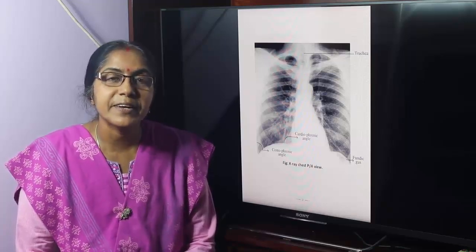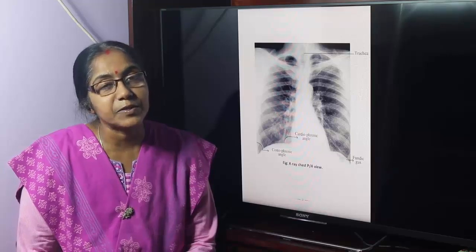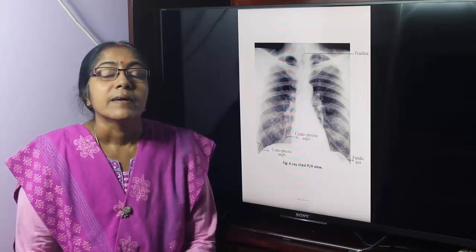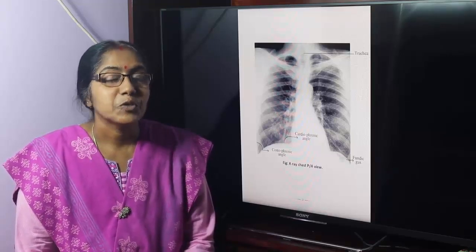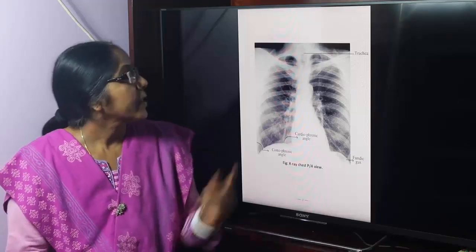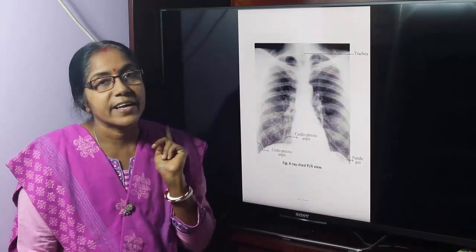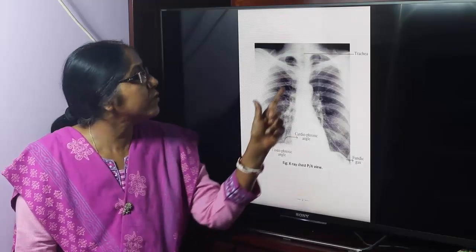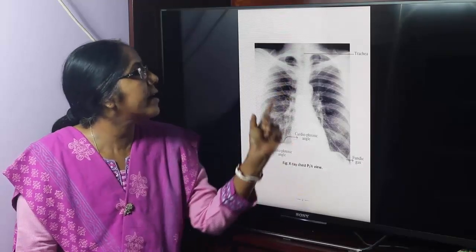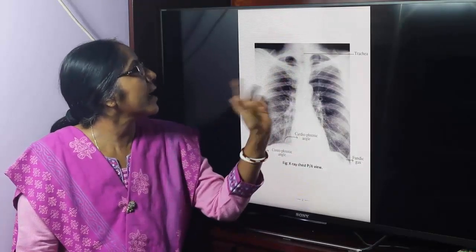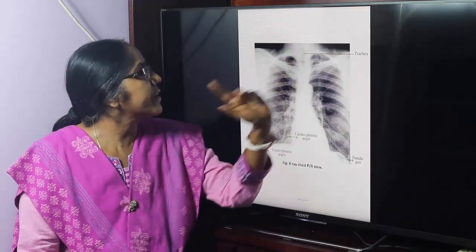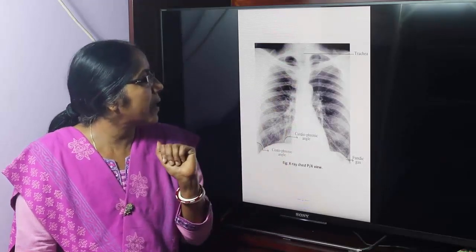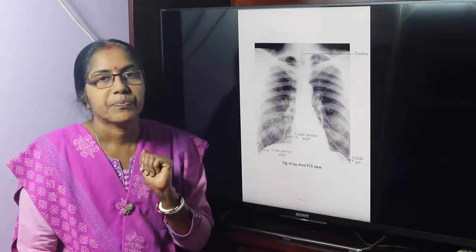Now the topic is Radiological Anatomy. What is a Radiograph of the Chest? This is the x-ray chest, PA view, showing the shadows of the heart, lungs, trachea, clavicle, ribs, and the right and left arms of the diaphragm.